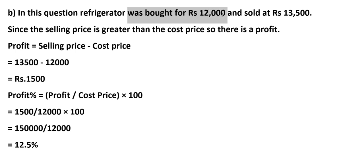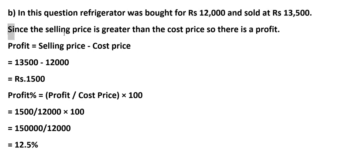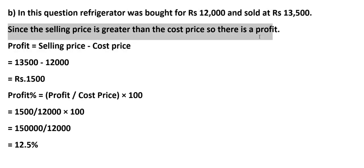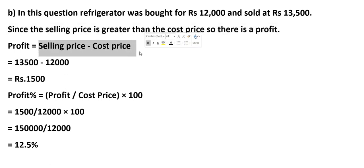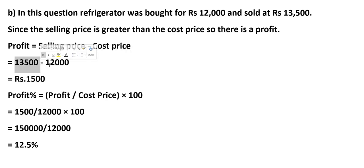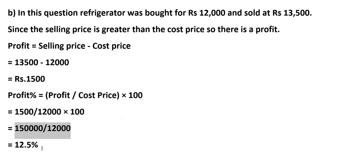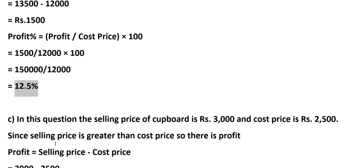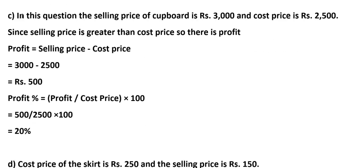Second problem: a refrigerator was bought for Rs. 12,000 and sold for Rs. 13,500. Since the selling price is greater than the cost price, there is a profit. Profit = Rs. 13,500 − Rs. 12,000 = Rs. 1,500. Profit percentage = (1,500 ÷ 12,000) × 100 = 12.5%.